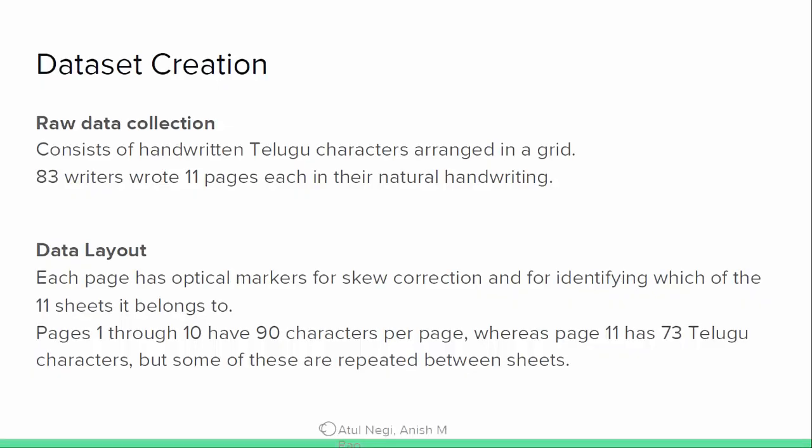For the dataset generation, two characters were arranged in a grid and 83 different writers participated. 83 different writers is a comprehensively large number, and each wrote 11 pages in their natural writing. When processing things at this scale, you need a robust approach. Each page had optical markers kept on it, which help to detect and correct the skew optically through the image processing method.